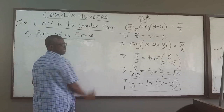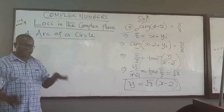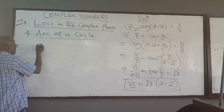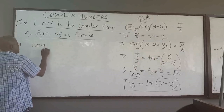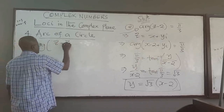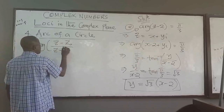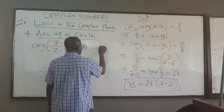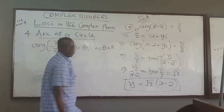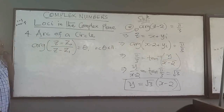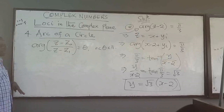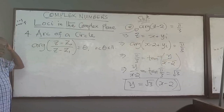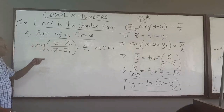Number four is the arc of a circle. In the complex plane, the arc of a circle is described by the equation: arg((z minus z naught) over (z minus z₁)) equals theta, where theta is some angle. This is a little more complicated than the previous ones, but we will try to explain it.